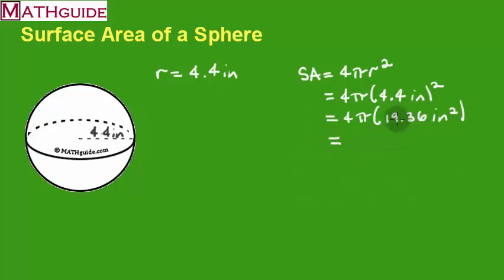So I'm going to multiply this 19.36 times 4 and I'm going to get exactly 77.44. Pi is still in there and the units are still inches squared.